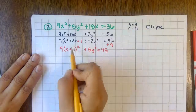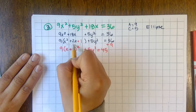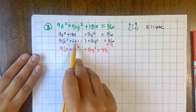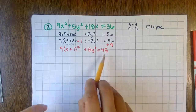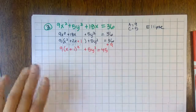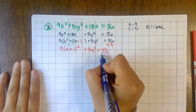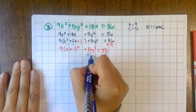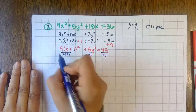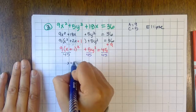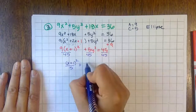For completing the square, it's two numbers that multiply to get one and add to get two, or just use half the middle term. Divide everything by 45 so it equals one — nine divided by 45 is one-fifth, and five divided by 45 is one-ninth. This gives the ellipse in standard form.